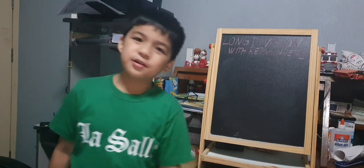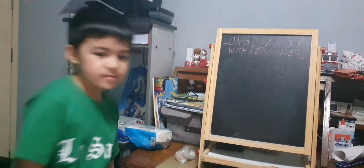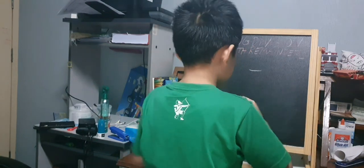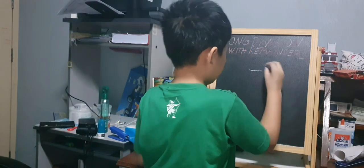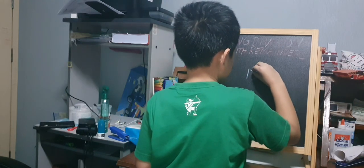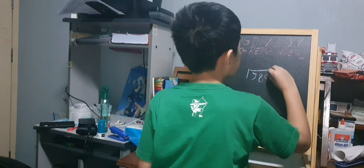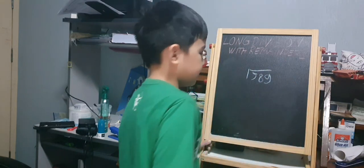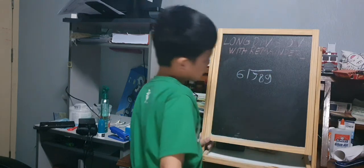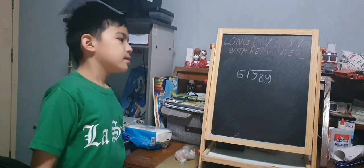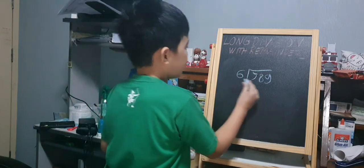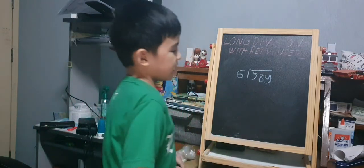I have two examples. The first one is 589 divided by 6. 6 is the divisor and 589 is the dividend.